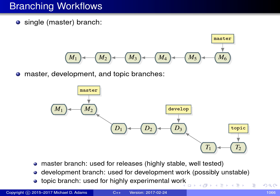The figures on this slide depict two branching workflows commonly used in practice. The first workflow consists of just a single branch, usually called master, where commits form a single linear chain. The second workflow involves three branches: a master branch, a development branch, and a topic branch. The master branch contains only highly stable, well-tested code for software releases. The development branch is used for development work and is not necessarily stable; when it becomes sufficiently stable, it is merged into master. A topic branch is a short-lived branch for a small feature, and when complete, is merged into the development branch.